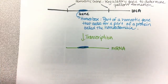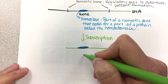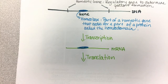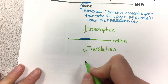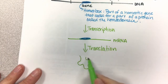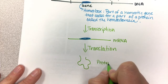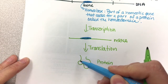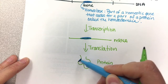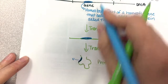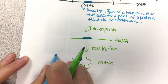After mRNA processing occurs, next we get translation. Translation gives you your finished protein, which folds on itself and becomes the right shape. Part of that amino acid chain — this is your protein — is going to have the homeobox region coded within it. That part of the protein coded for by the homeobox is called the homeodomain.